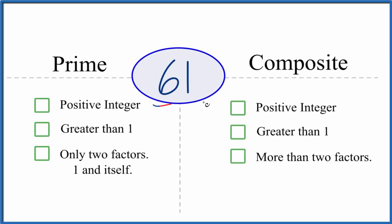Let's figure out whether the number 61 is prime or composite. So we'll start by looking at whether 61 is a prime number.